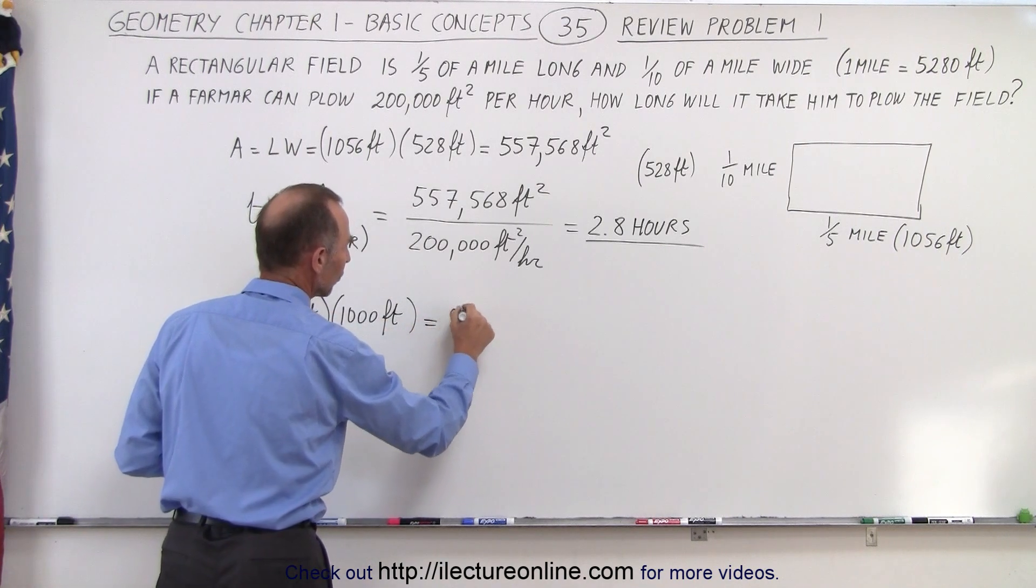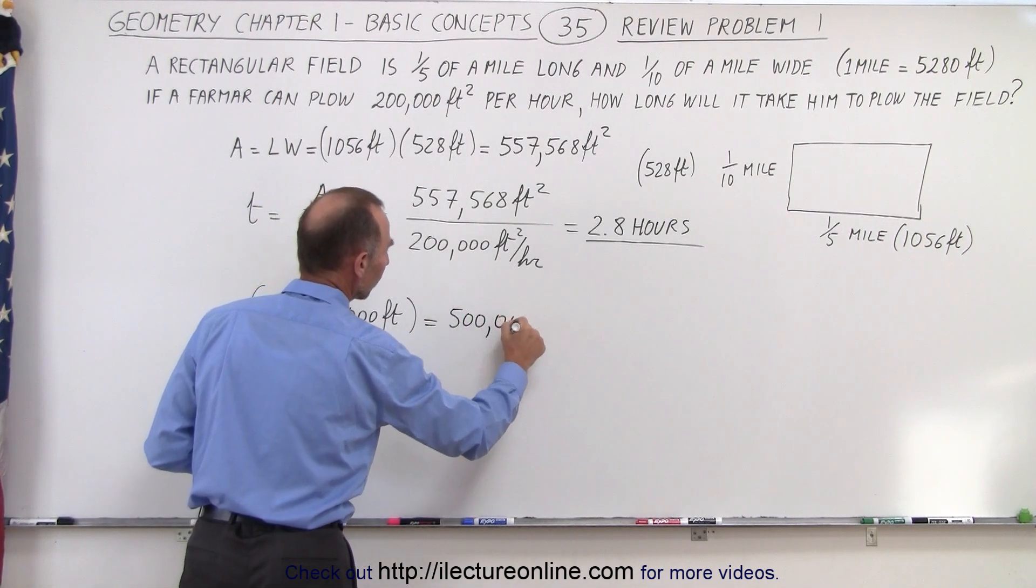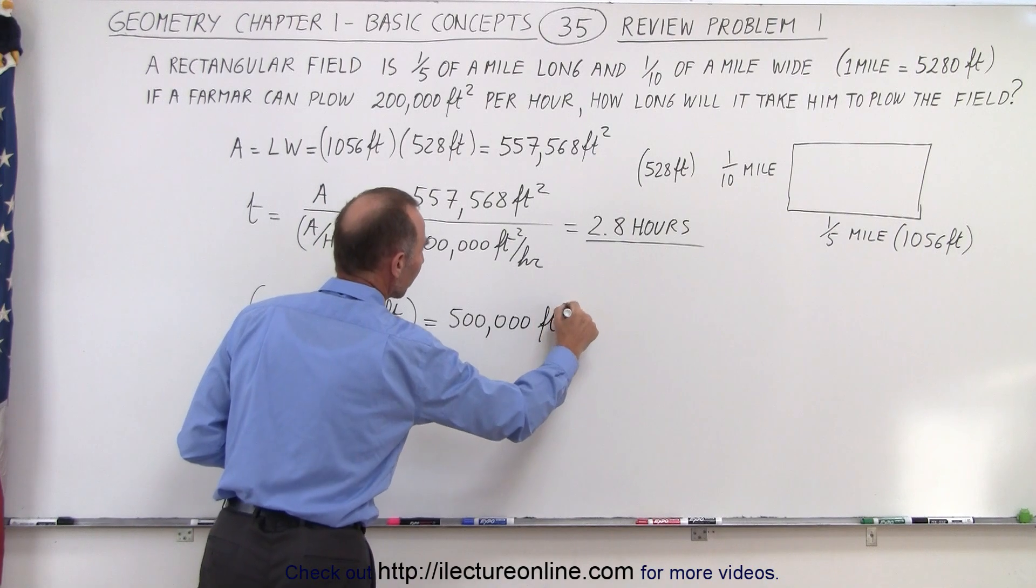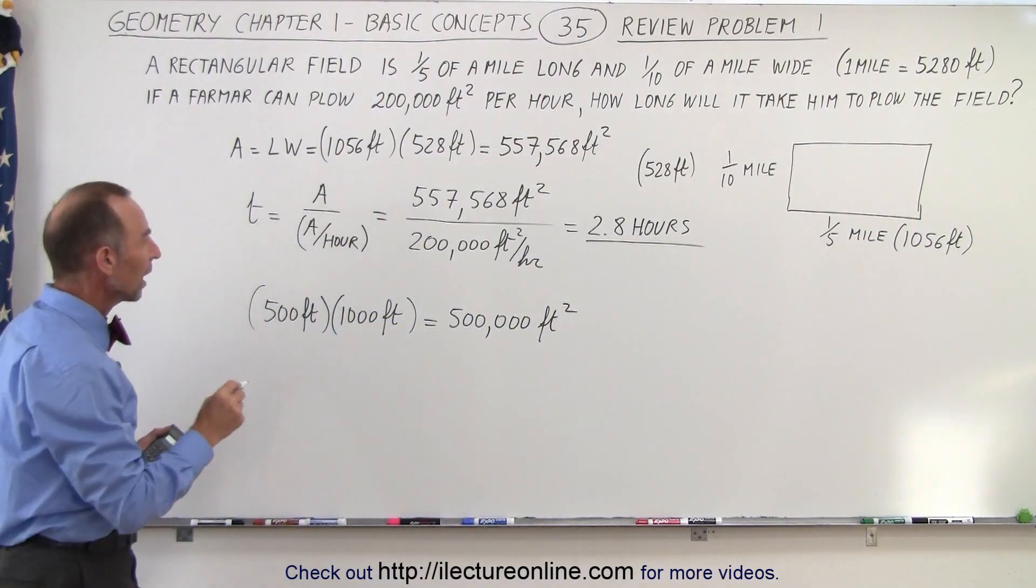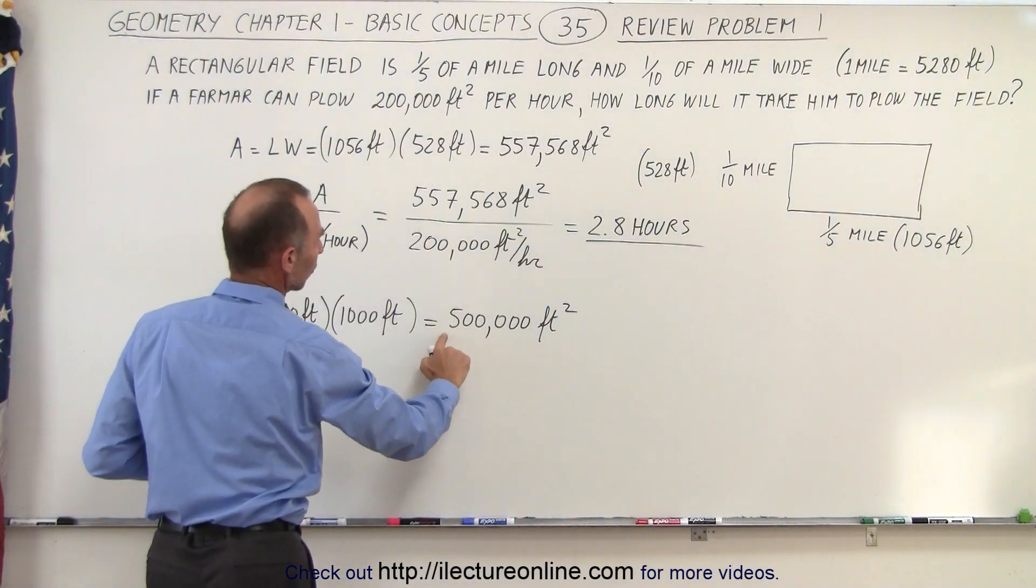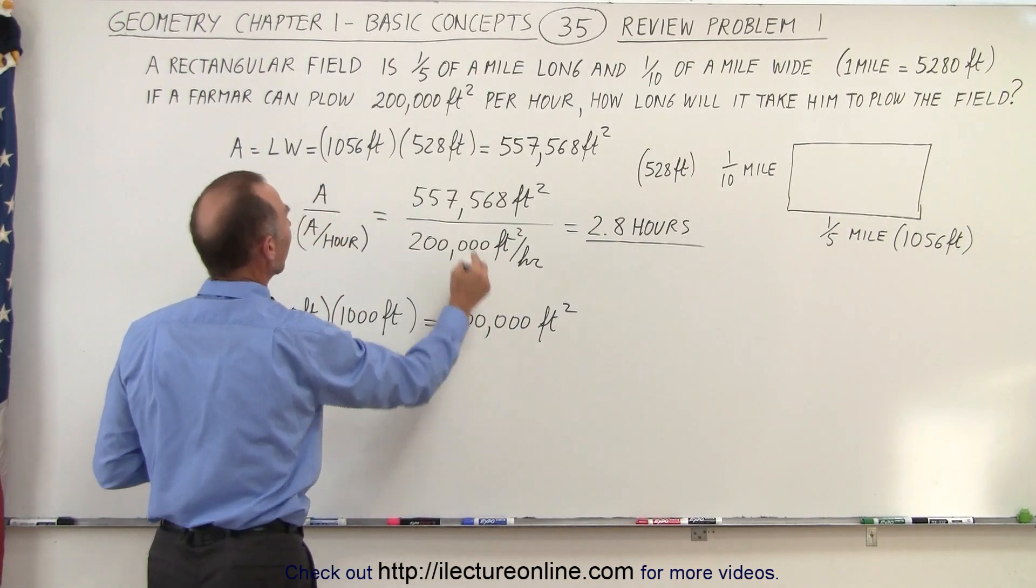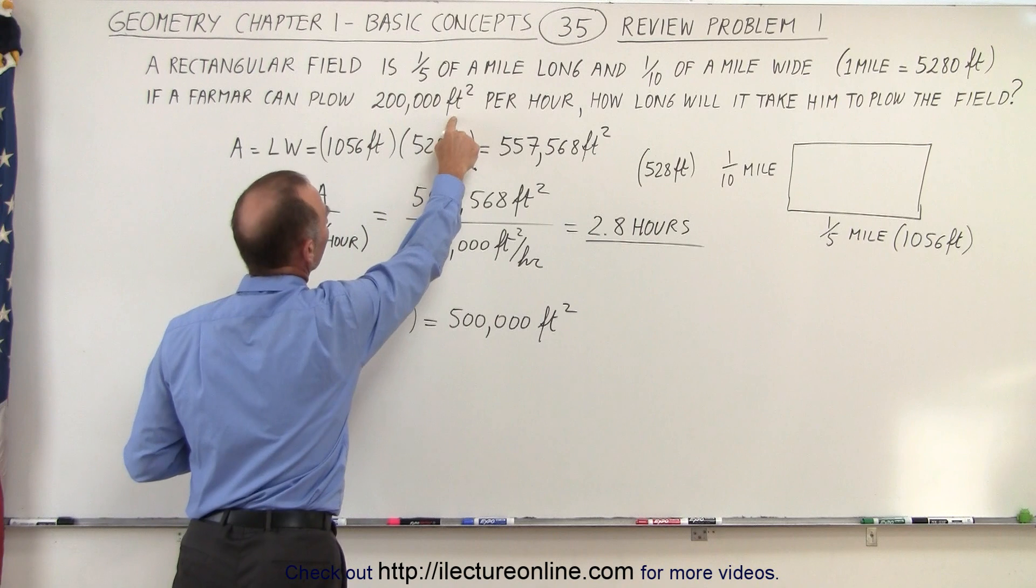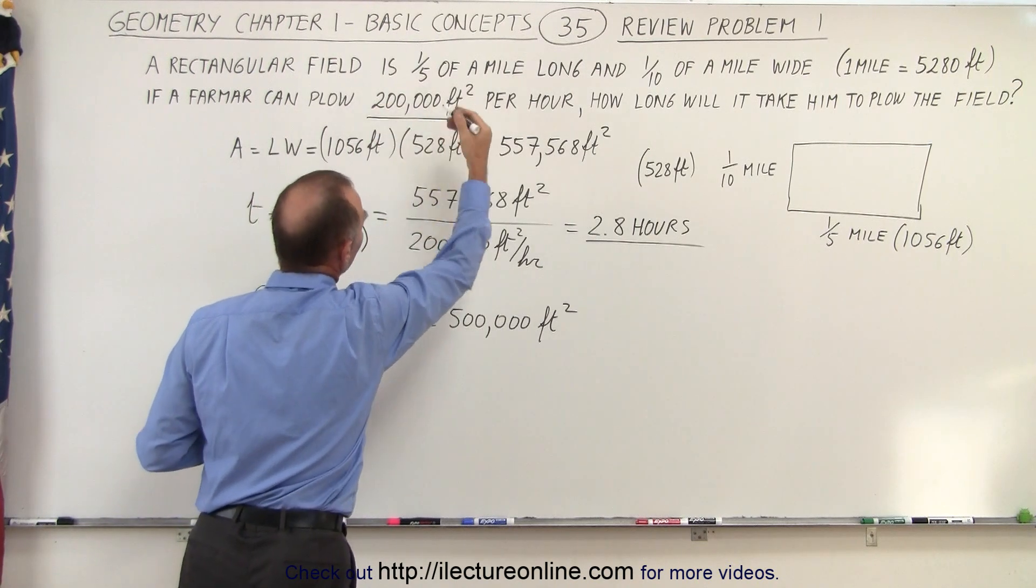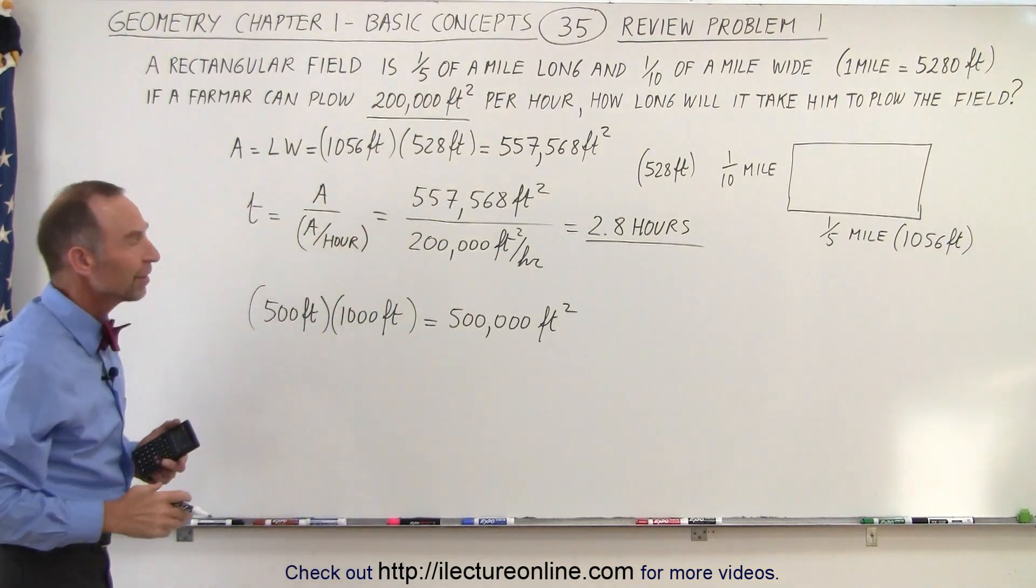So this would be equal to 500,000 square feet. So now when we take a look here, notice 500,000 square feet for the size of the plot of land. And the farmer can plow it at 200,000 square feet per hour.